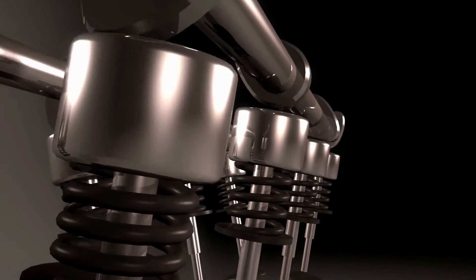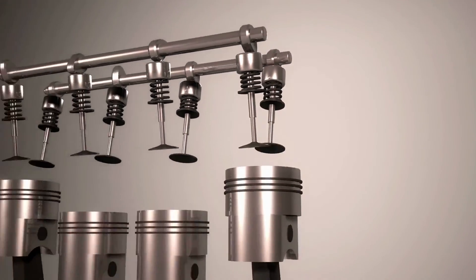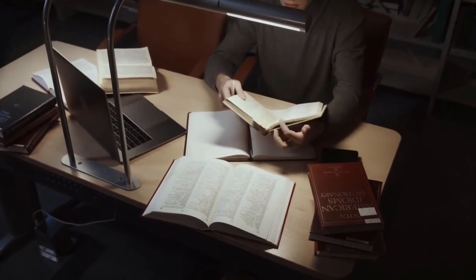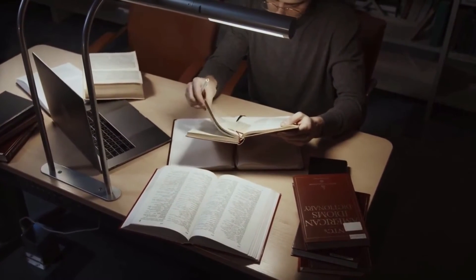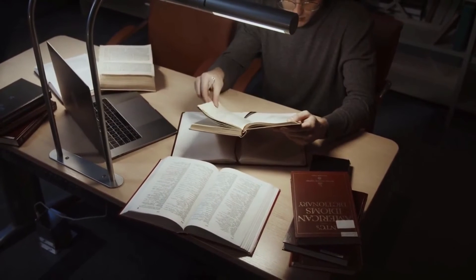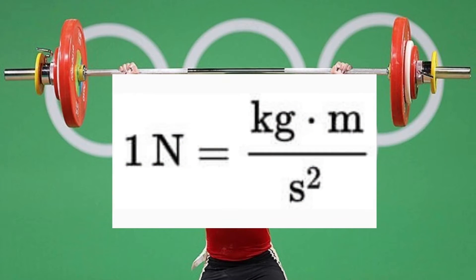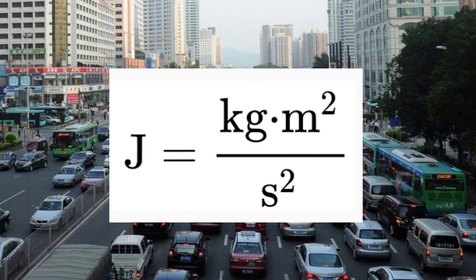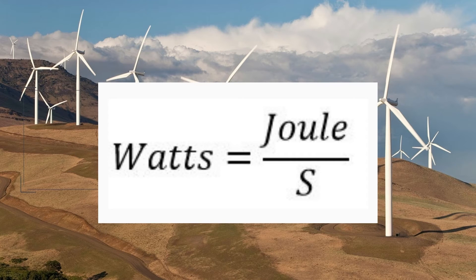Rapid advances in science and technology in the 19th and 20th centuries fostered the development of several overlapping systems of units of measurement as scientists improvised to meet the practical needs of their disciplines. They added three new units among many others in 1948, such as a unit of force, the Newton, which is defined as that force which gives to a mass of one kilogram an acceleration of one meter per second per second; then a unit of energy called the joule, which is defined as the work done when the point of application of a Newton is displaced one meter in the direction of the force; and a unit of power named the watt, which is the power that in one second gives rise to energy of one joule.